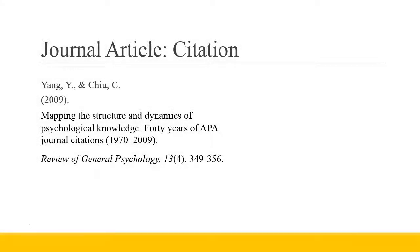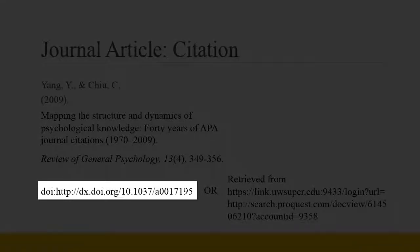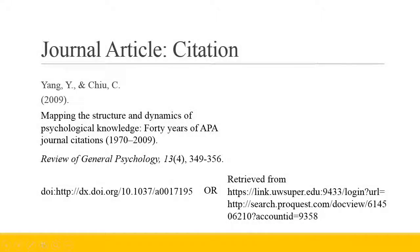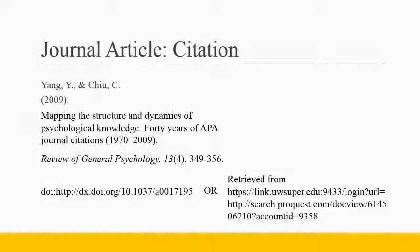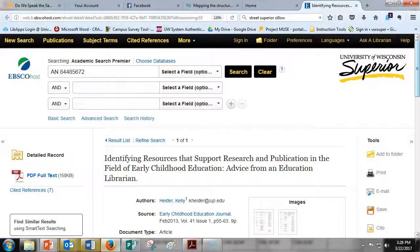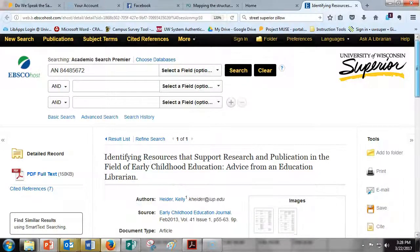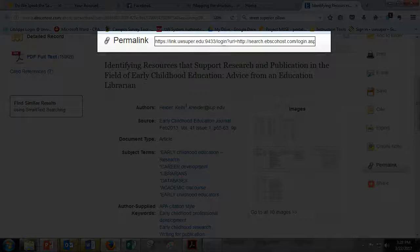Finally, for articles retrieved online, we will need to supply either a DOI or a URL. If the article has been assigned a DOI, it will be listed with the record information in the database the article was retrieved from. Copy this number and paste it prefaced by the letters 'doi:'. Note that 'doi:' is lowercase. If an article does not have a DOI assigned, you will need to obtain a permanent link to the article. If you are using a library tool such as EBSCOhost, you will need to use the permalink button under the tools bar to generate a permanent link your readers can access later.